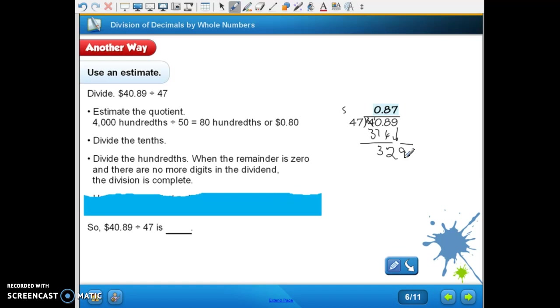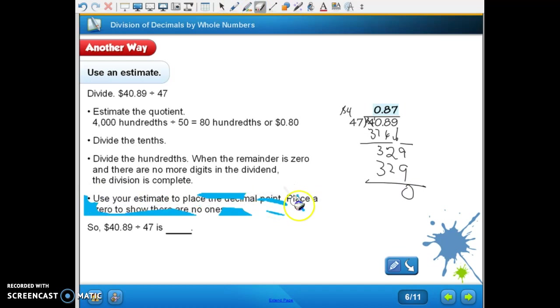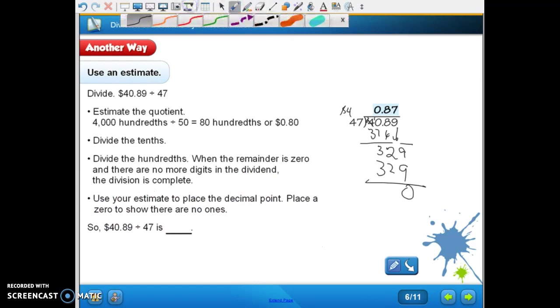Seven times seven is forty-nine, right? Regroup our four. Seven times four is twenty-eight, plus four is thirty-two. We subtract that with nothing to divide up anymore. So use your estimate to place the zero to show that there are no ones. So forty-dollars and eighty-nine cents divided by forty-seven is zero dollars and eighty-seven cents.